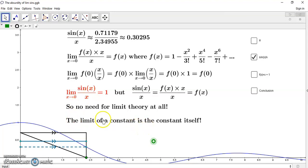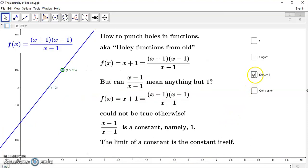Now, there's no need for limit theory at all in this particular case. We know that this expression here is equal to f of x, and we know that it is defined when x is equal to 0. Of course, we cannot write 0 over 0 because that's meaningless garbage. So once again, the limit of a constant is the constant itself, isn't it?